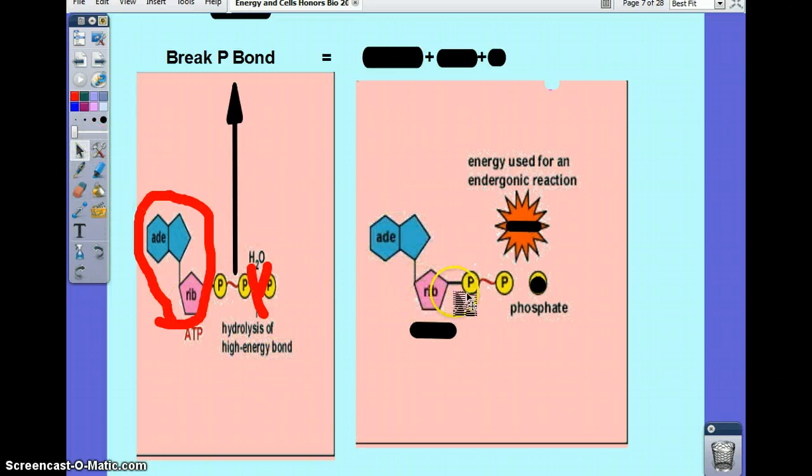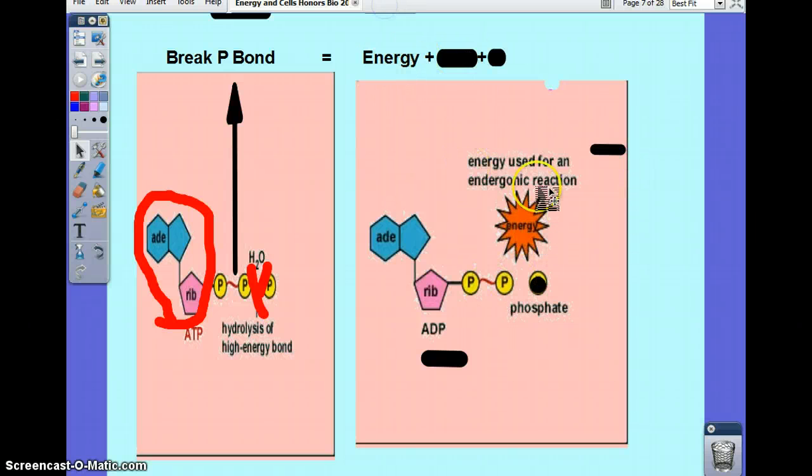I'm left over with ADP, which is adenosine right here, adenine and ribose, di, meaning two phosphates. I'm also releasing excessive amounts of energy, which are going to be used by the cell, and a phosphate remains.